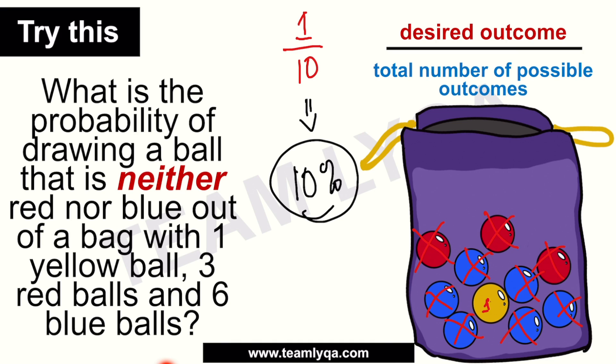That's where people get confused — especially when both ten percent and ninety percent appear in the options. Remember: neither means not either — we don't want those. So we take what's left. And with 'either/or,' both mentioned colors are acceptable answers. Always keep that in mind.